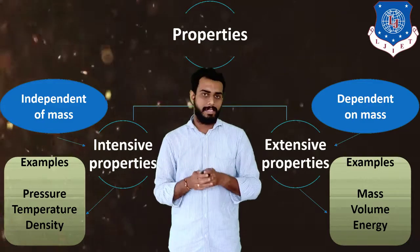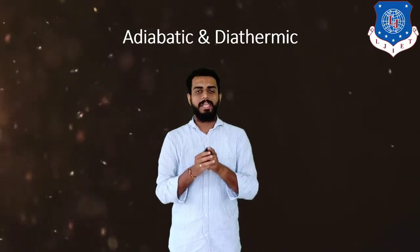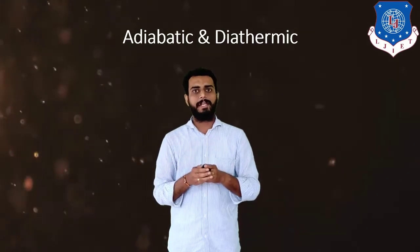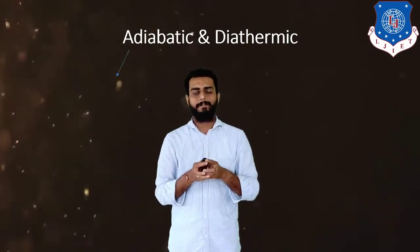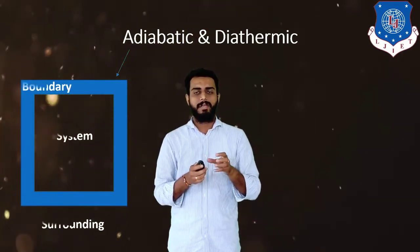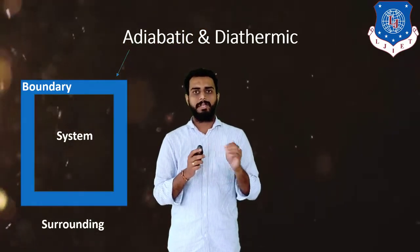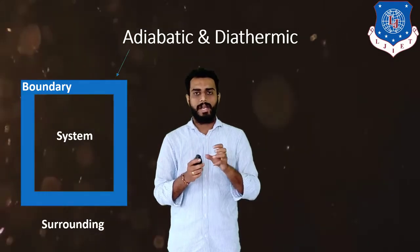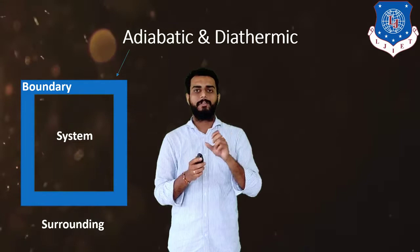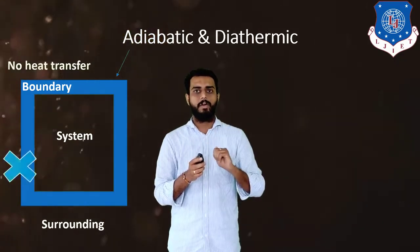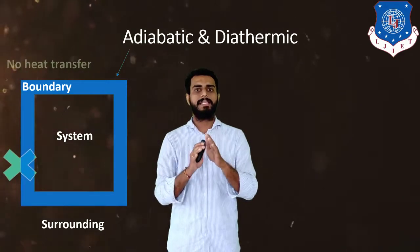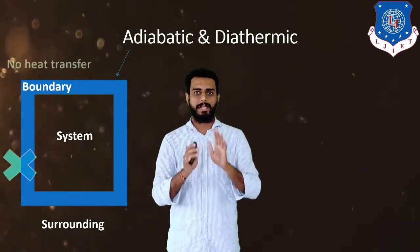Next: adiabatic and diathermic. As you can see on the screen, we have a system and surrounding with a boundary in between. Adiabatic means heat cannot transfer from the system to the surrounding, or from the surrounding to the system — there will be no heat transfer. That is known as adiabatic.